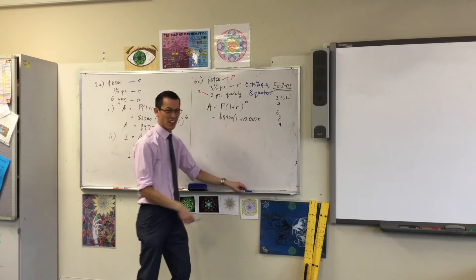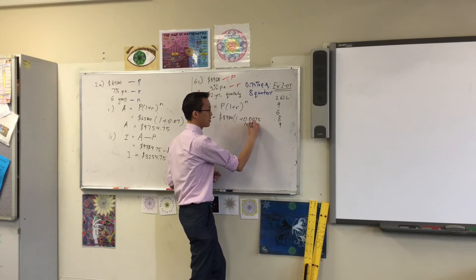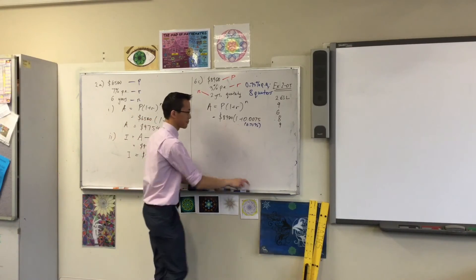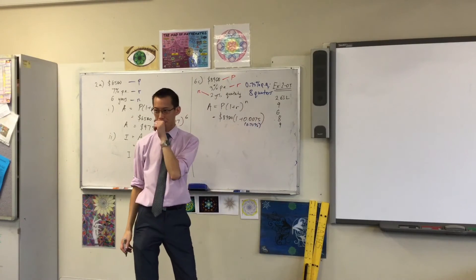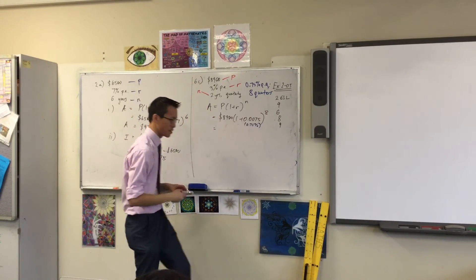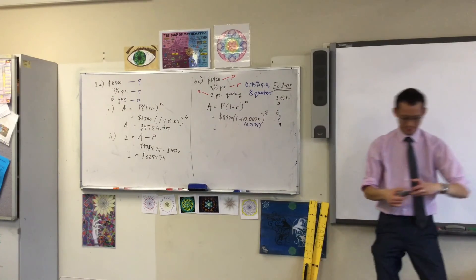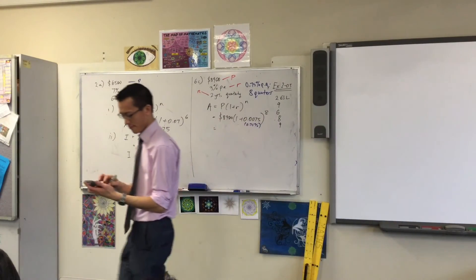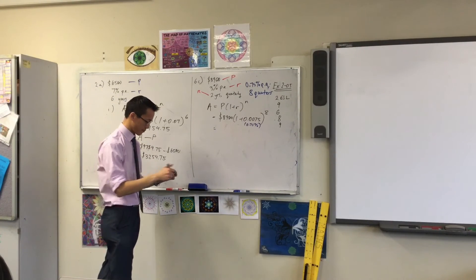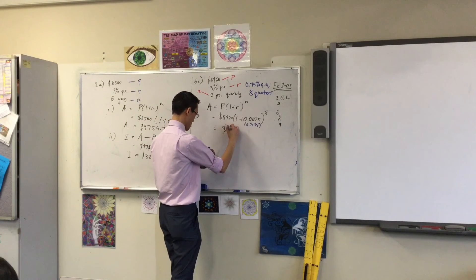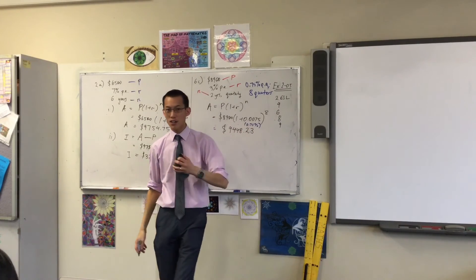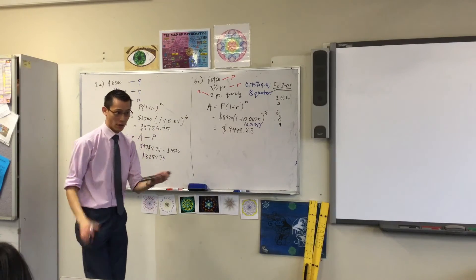Or, alternatively, if you find looking at that a little bit confusing, you can just write 0.75 divided by 100. That would work, but I prefer to convert the decimal. All right. What will my power be? How many quarters? Eight. And, you're going to get a figure at the end. So, let me see if I can beat you to it. $9,448.23. Agreement? Yep. Wonderful.